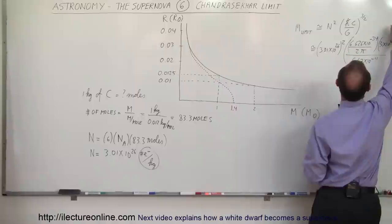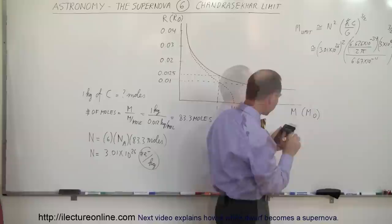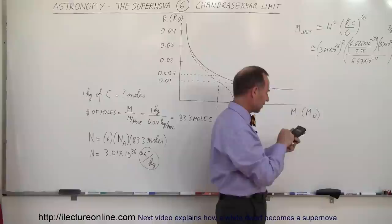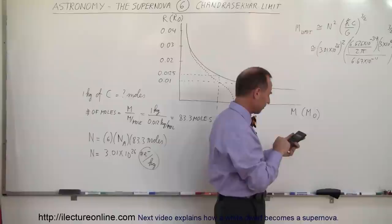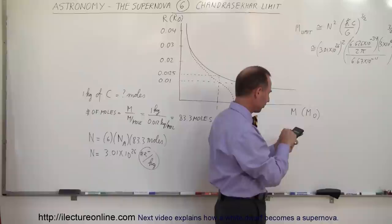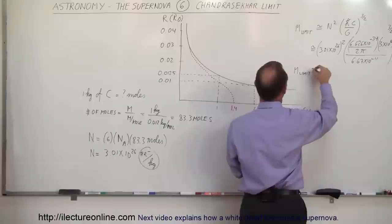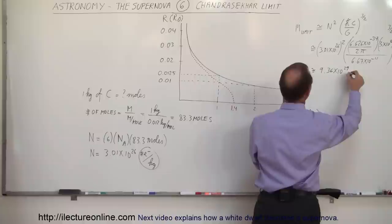If we do that, we get the limit, at least the initial limit that was calculated for the mass of a white dwarf. We do this number: 6.626e to the minus 34 divided by 2, divided by π, times 3e to the 8, divided by 6.67e to the minus 11, take the whole thing and raise it to the 1.5 power, and then multiply times 3.01e to the 26 squared. And we end up with a mass limit approximately equal to 9.36 times 10 to the 29 kilograms.